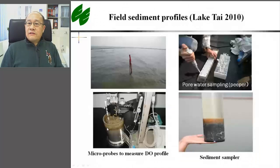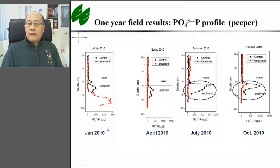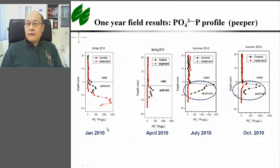We studied the capping effect in the open lake of Mei Liang Bay during the winter of 2010 at Lake Taihu, where only the sediment was treated but not the open water. For the untreated lake sediment, there is a high peak of phosphate in summer and autumn. This phosphate peak was largely removed by the capping treatment applied during the winter.